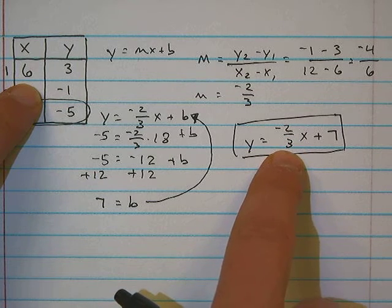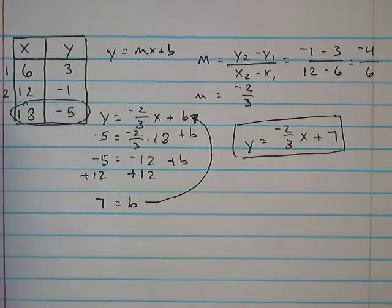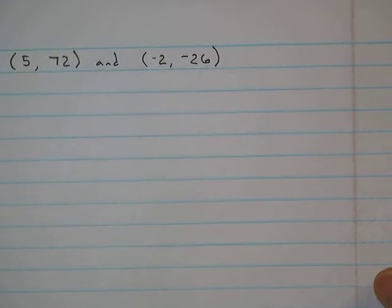Again, we would check it. I'll check it by putting 6 in. Negative 2 times 6 is negative 12, divided by 3 is negative 4. Negative 4 plus 7 is positive 3. So we've got the right answer.